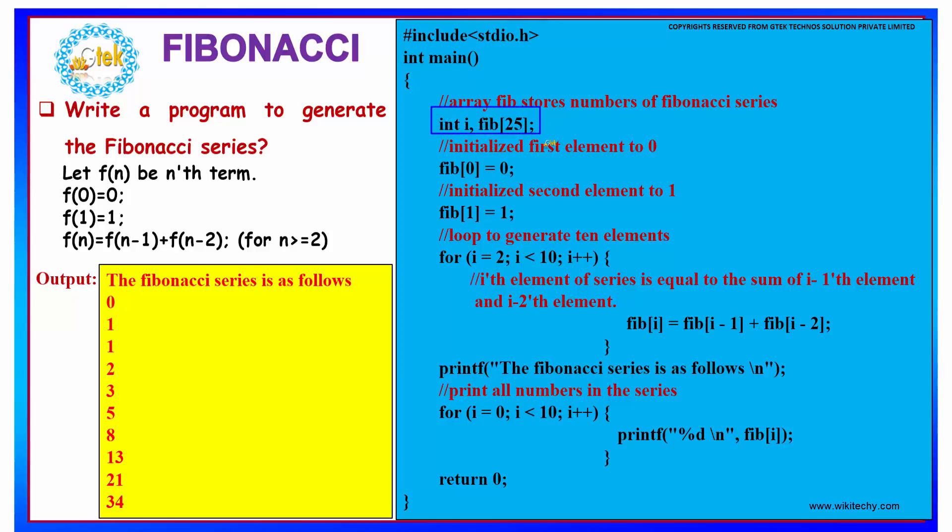Then we are initializing a Fibonacci array with a length of 25 as type int, and initialize the first and the second element to be 0 and 1.